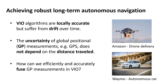Our research is motivated by the goal of achieving reliable and accurate state estimation in long-term autonomous navigation. Visual Inertial Odometry algorithms are locally accurate but accumulate drift over time. As a consequence, global measurements are needed to achieve globally consistent estimates for long trajectories. In this work, we try to answer the question: how can we efficiently and accurately fuse global positional measurements in VIO?